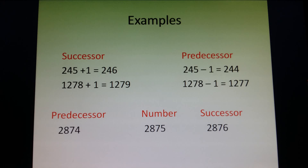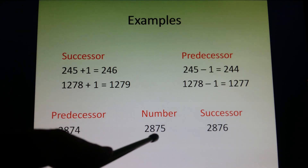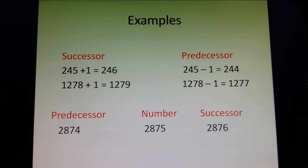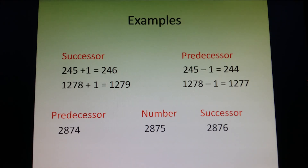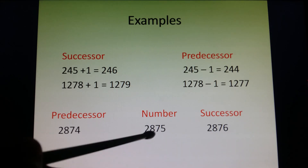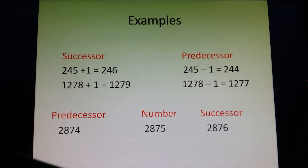Let's see another example. The number 2875 is given. Its predecessor will be 2874, as we subtracted 1 from 2875. The successor of 2875 is 2876 — after adding 1 to 2875, we get 2876. To repeat: predecessor is subtracting 1 from a number, and successor is adding 1 to a number.